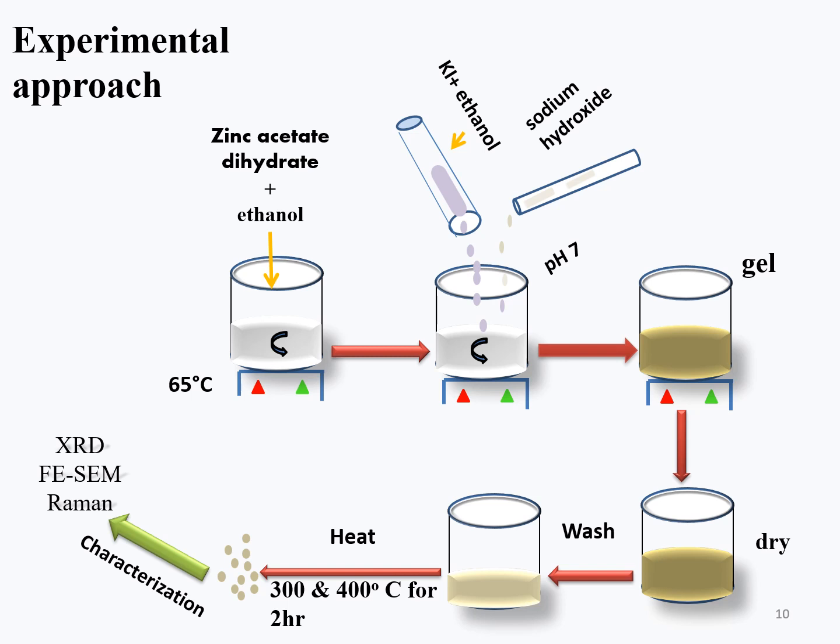The gel was dried at room temperature for 24 hours. The iodine-doped ZnO powders were calcinated in air at 300 and 400 Celsius for 2 hours.